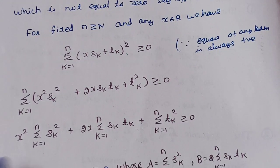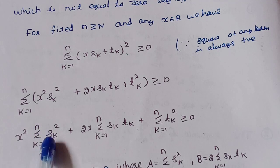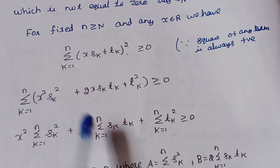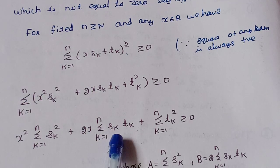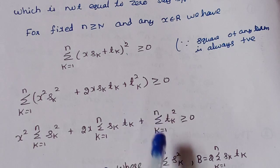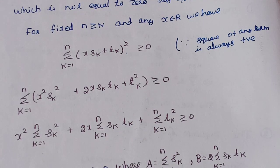After distributing the summation over each term we get: x squared into summation k=1 to n of Sk squared, plus 2x times summation k=1 to n of SkTk, plus summation k=1 to n of Tk squared, which is greater than or equal to 0.